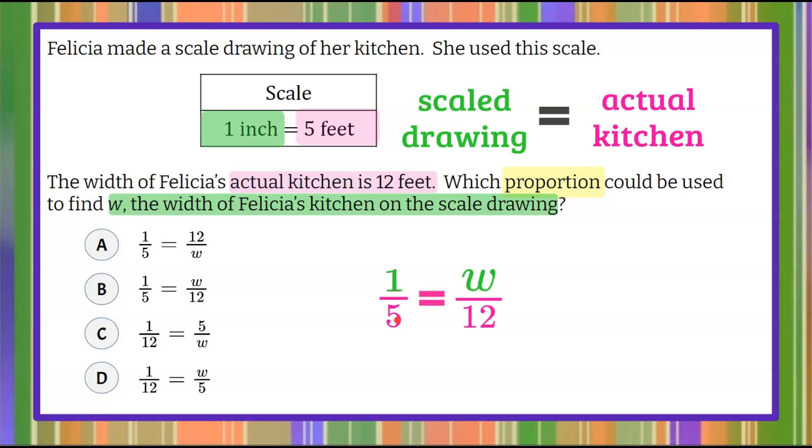So if our scale ratio is one to five, and the actual kitchen is 12, we're going to put W here, and we could solve this using cross product property to find out what the width of the kitchen is on the scale drawing. But we're not solving, we're just identifying the correct proportion.